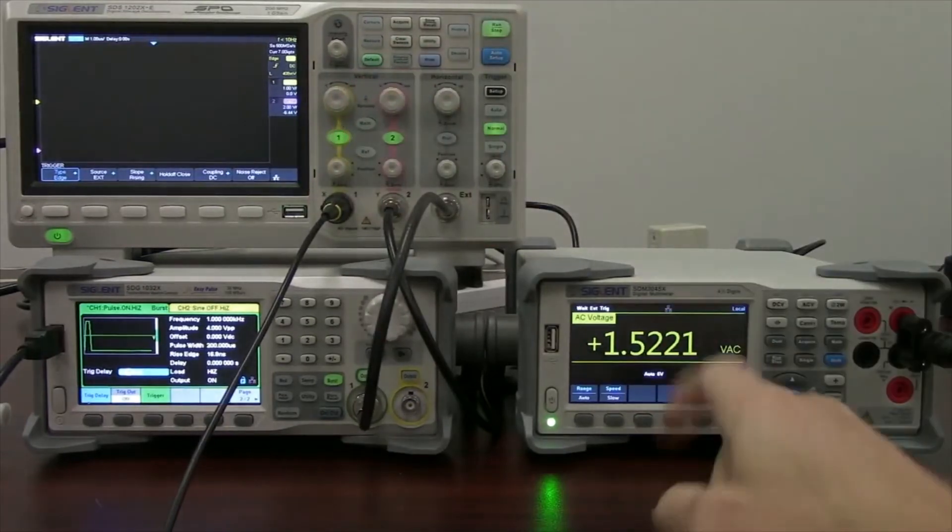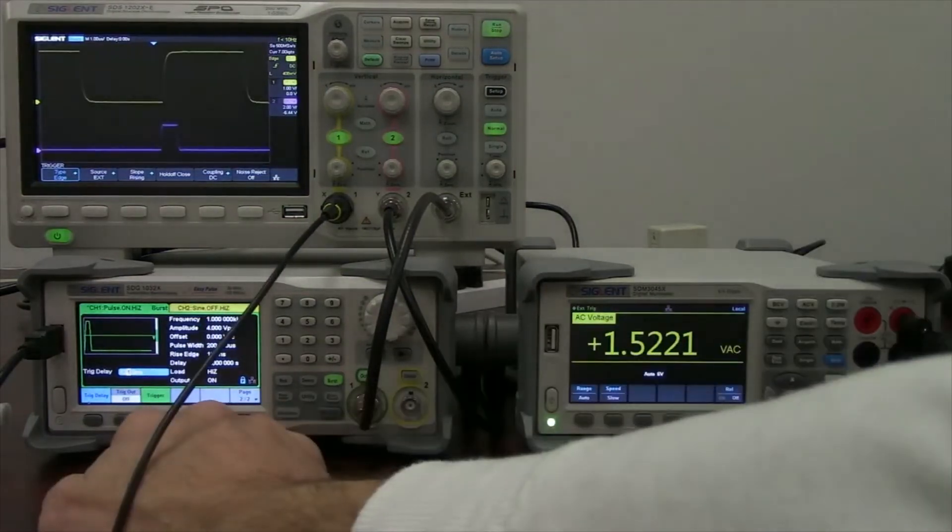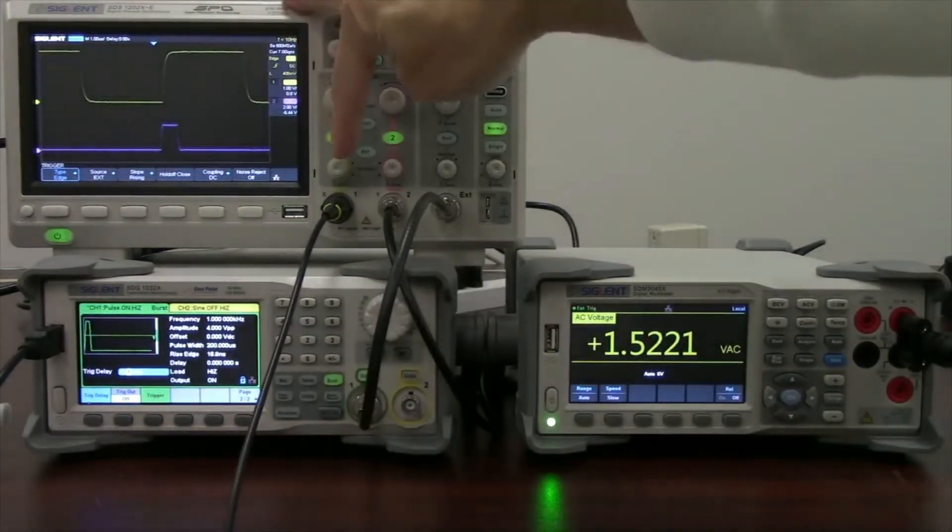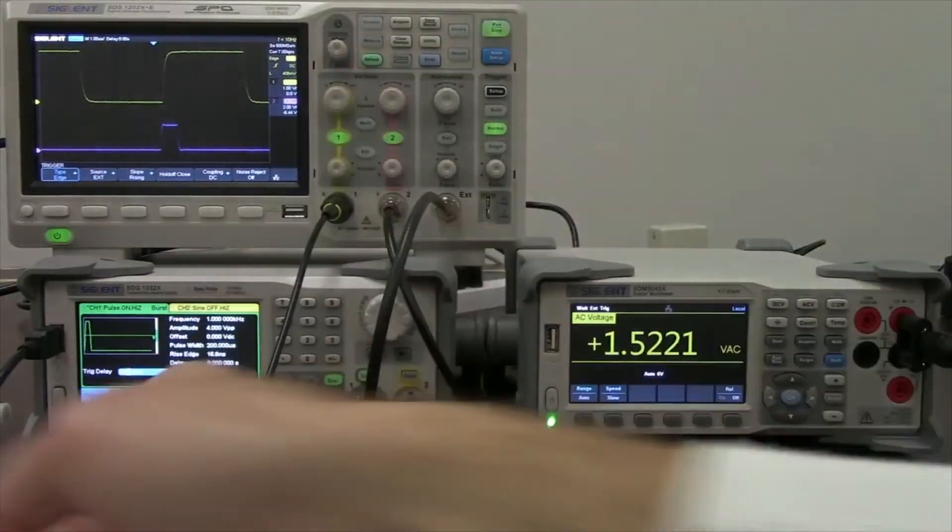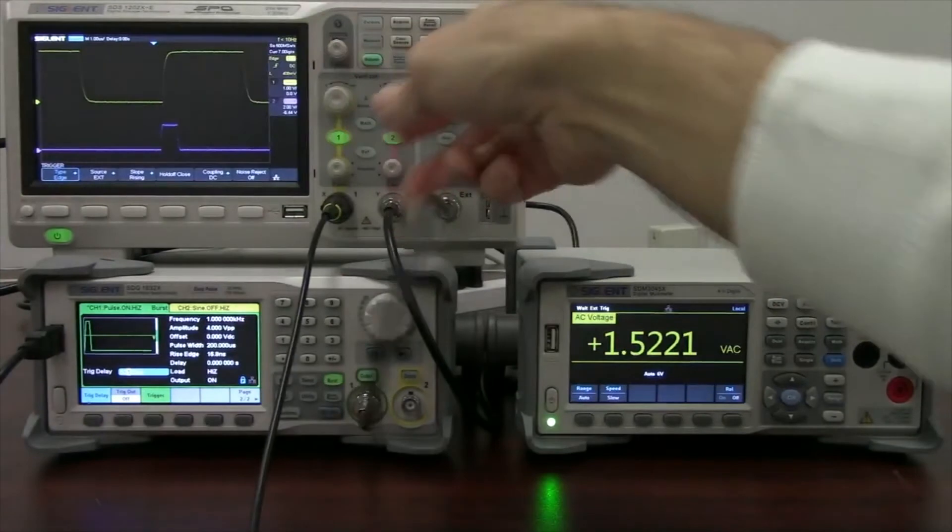It's going to then measure these two channels on the scope as well as cause the update reading on the voltmeter. And you can see that right now, pressing the trigger. So the yellow trace is channel 1. You'll see when I have a square wave that's coming off of a demo board that I have here.